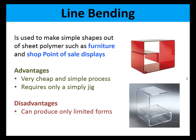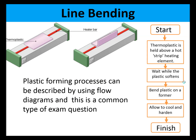Line bending is used to make simple shapes out of sheet polymer such as furniture and shop point-of-sale displays. The advantage is it is a very simple process and often requires only a simple jig such as a block of wood. The disadvantage is it can only produce limited forms. The process steps in a flow diagram are: the thermoplastic is held above a hot strip heating element; wait while the plastic softens; bend the plastic on a former; allow to cool and harden; finish. It's a simple process.